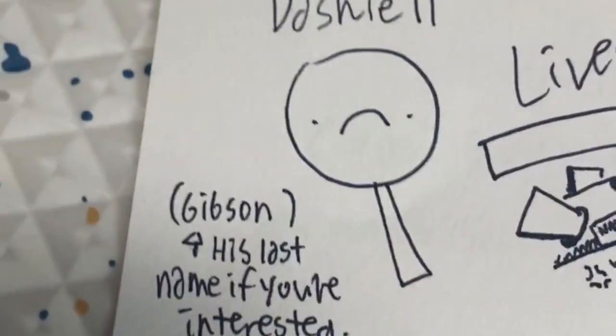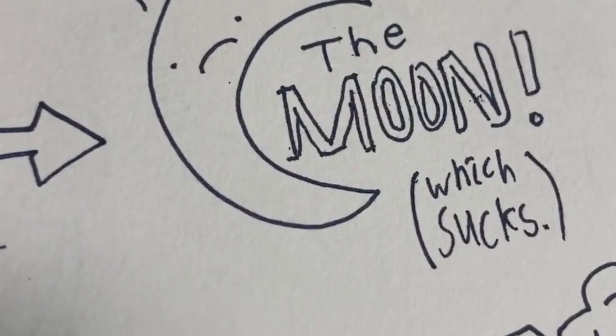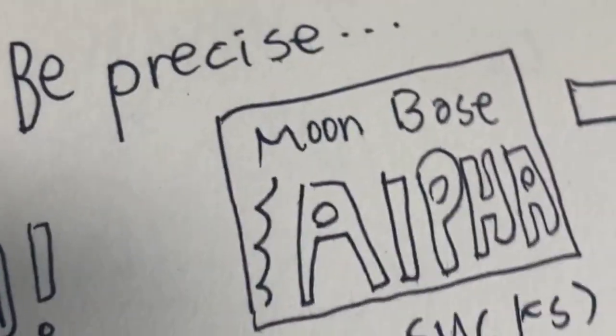Hello everyone, this is my chapter summary of chapter one of Space Case by Stuart Gibbs. So there's this dude, his name is Dashiell Gibson, and he lives on the moon, which sucks. To be precise, he lives on moon base alpha, which also sucks.